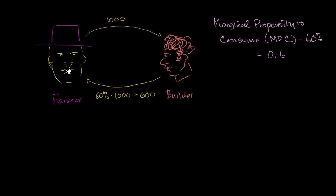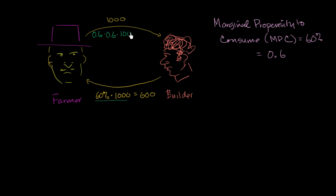Now the farmer says, 'Above and beyond the $1,000 that I just spent, the builder just spent $600 more on me than he would have otherwise — he bought that much more food. I have $600 more. I have a marginal propensity to consume of 0.6, so I will spend 60% of that $600.' So it will be 0.6 times $600, which equals $360.